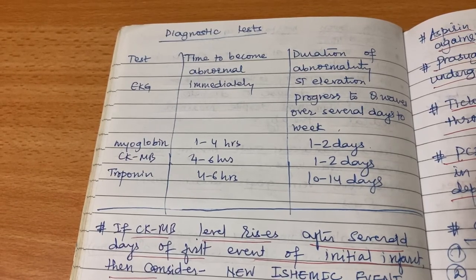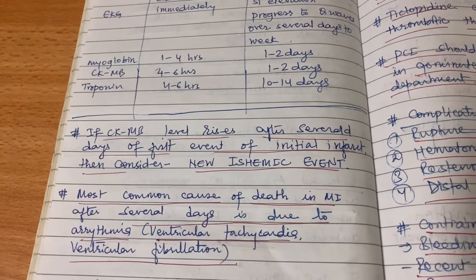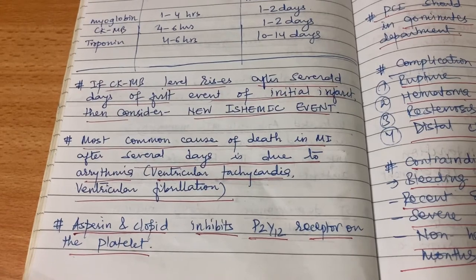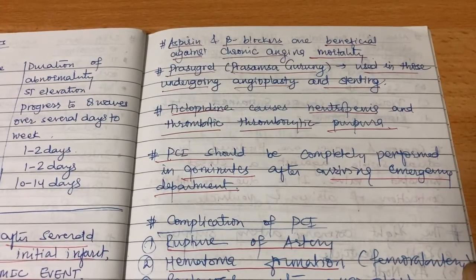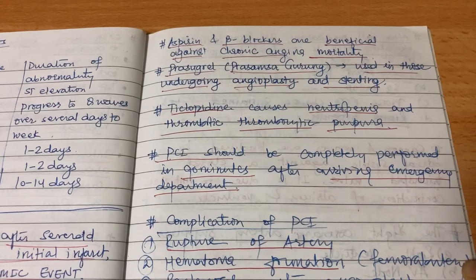If CK-MB level rises after several days of the first event, consider a new ischemic event. The most common cause of death in MI after several days is arrhythmia — ventricular tachycardia and ventricular fibrillation. Aspirin and clopidogrel inhibit the P2Y12 receptor on platelets. Aspirin and beta blockers are beneficial against chronic enzyme mortality. Prasugrel is used in those undergoing angioplasty. Ticlopidine causes neutropenia and thrombotic thrombocytopenic purpura.